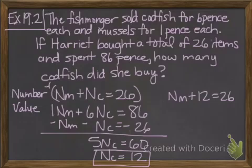Again, we know the number of mussels plus the number of codfish is 26. N sub m plus 12 is 26, so n sub m has to equal 14.